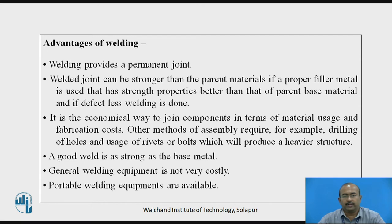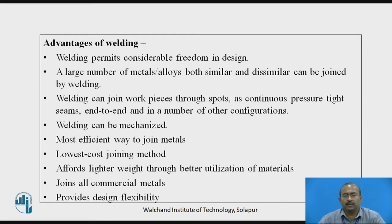When talking about welding processes, some of the advantages are: welding provides a permanent joint; a welding joint can be stronger than the parent material — for example, if a proper filler metal is used, a good weld is as strong as the base metal itself. General welding equipment is not very costly, and portable welding equipment is available. Welding can be mechanized; it is the most efficient and lowest cost joining method of permanent type, and it provides design flexibility.